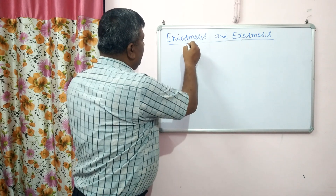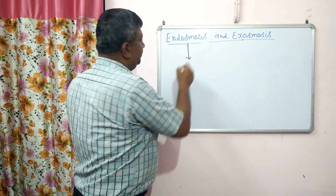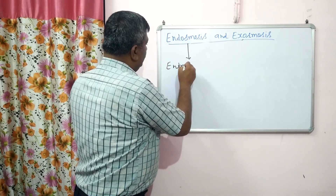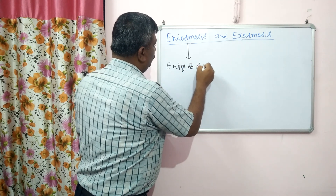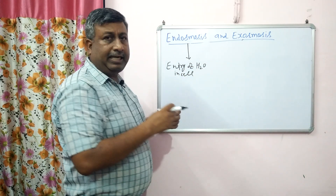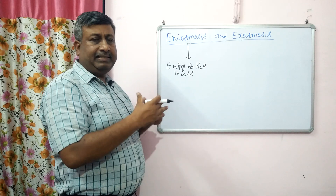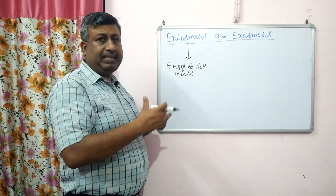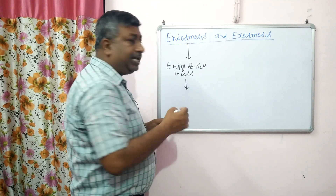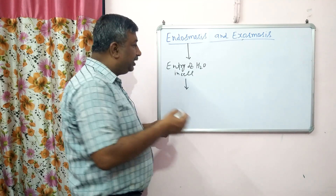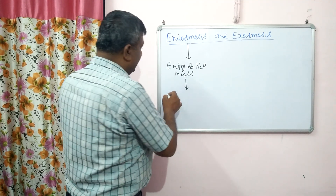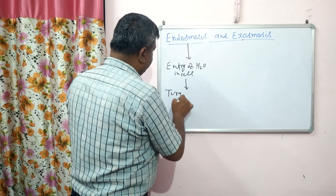Endosmosis is the entry of water into the cell. So water content of the cell increases, cell size increases, cell shape increases, and the cells become turgid.